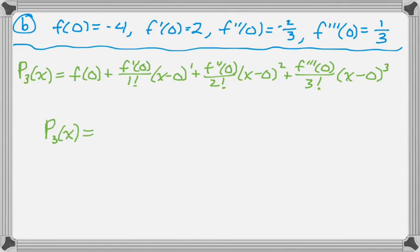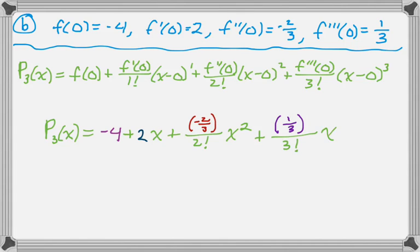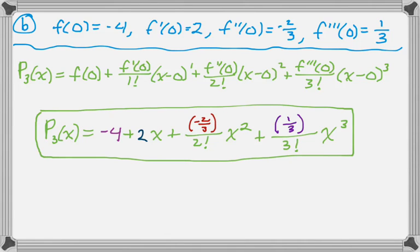I rarely even simplify these, I just do direct substitution. So f(0) is -4, f' is 2, I'm going to simplify that a little. f''(0) is -2/3, that's over 2!, then x^2, and then f'''(0) is 1/3, that's over 3!, and then x^3. That's my whole answer.